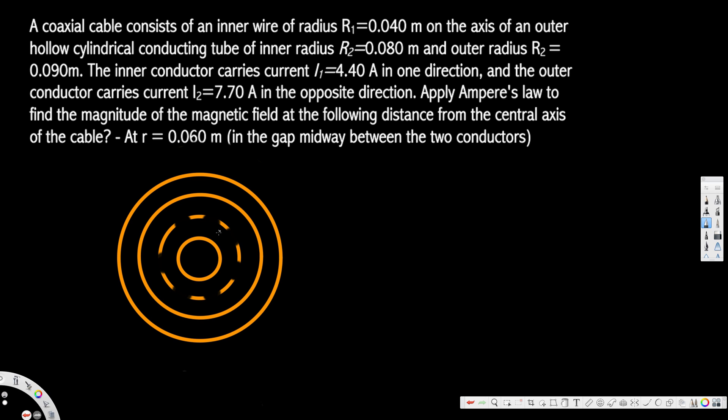Now let's note down the distances and currents. The inner and outer currents are in opposite directions. Let's assume the inner current is coming out of the page and the outer current is going into the page. This is I₁ and this is I₂.